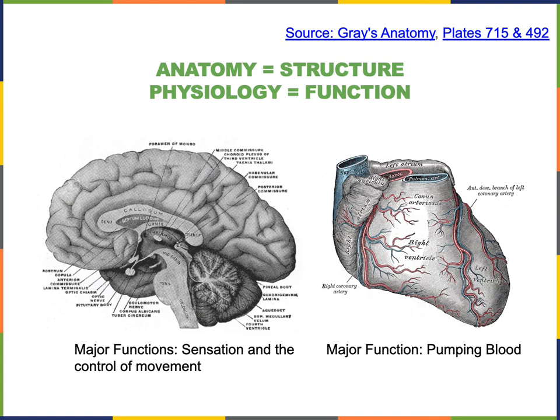Today we know the heart's functions are really to pump blood, and those functions of sensation and the control of movement are functions of the brain. We learned that mostly through a loss-of-function approach, where we study people who have damage to one of these organs. If you have damage to part of the brain — for example, the occipital lobe at the back — you might lose visual functions, whereas if a different part toward the front is damaged you might become paralyzed and lose the ability to control movement.